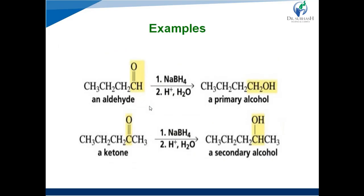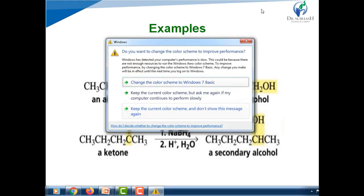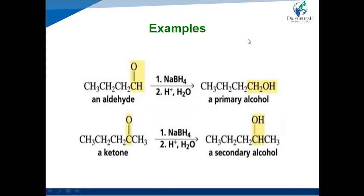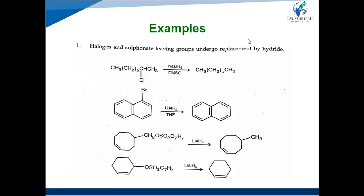Next examples are of aldehydes and ketones. The first example is butanal (butyraldehyde), which undergoes reduction with sodium borohydride to form the primary alcohol, 1-butanol. The second example is 2-pentanone, which undergoes reduction with a metal hydride to form the corresponding secondary alcohol, 2-pentanol.